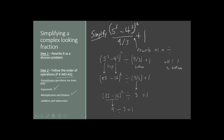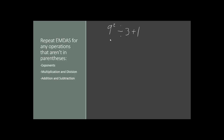Now we'll carry that forward. With this expression, we're going to repeat the order of operations for anything not in parentheses. We begin again with exponents. We have 9 raised to the second power, which is just 9 times 9, and 9 times 9 is 81. Divided by 3, plus 1.